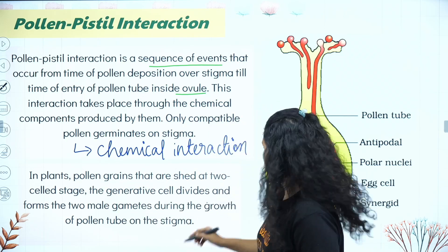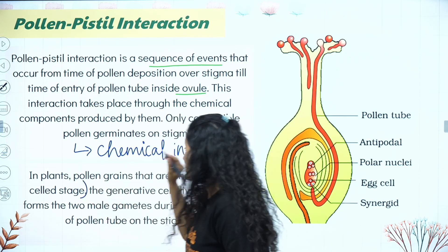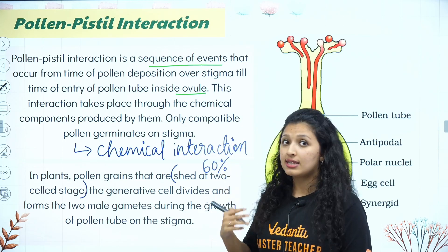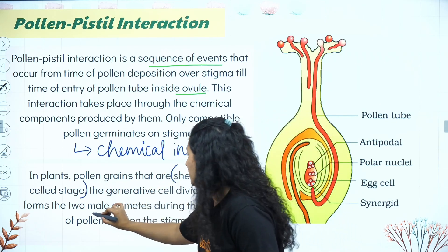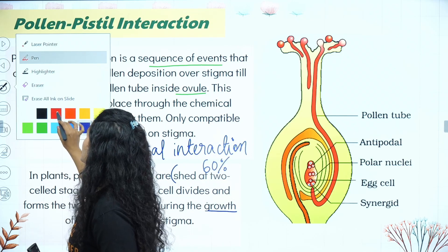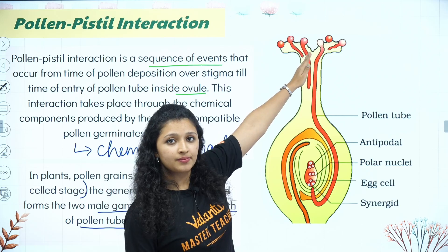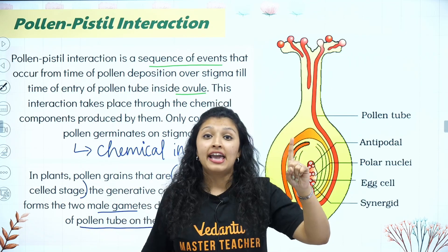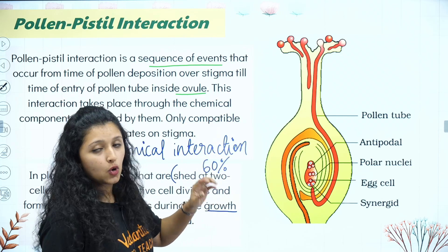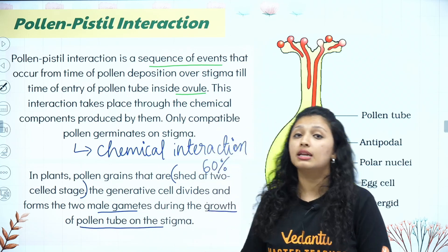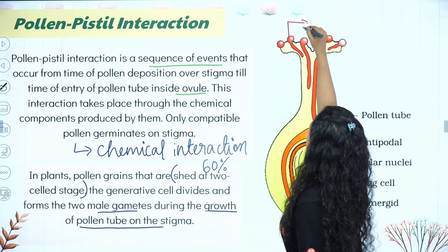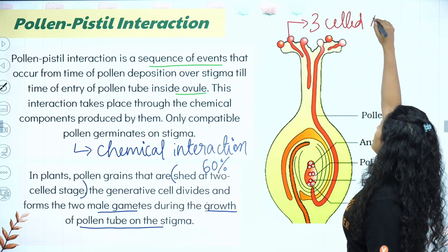In plants, pollen grains shed at the two-cell stage — 60% of angiosperms release pollen at the two-cell stage. That is why the generative cell divides and forms two male gametes during the growth of the pollen tube. In the remaining 40% of plants, pollen is released at the three-cell stage. Once they land on the stigma, if it is the two-cell stage, the generative cell undergoes mitosis to form the two male gametes.